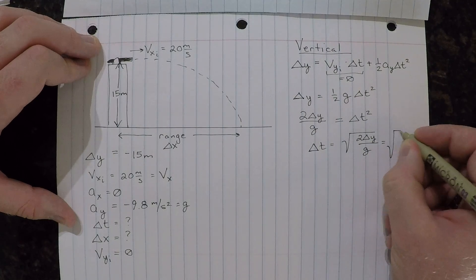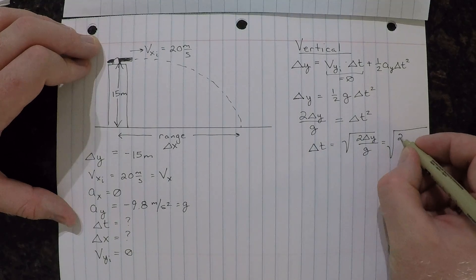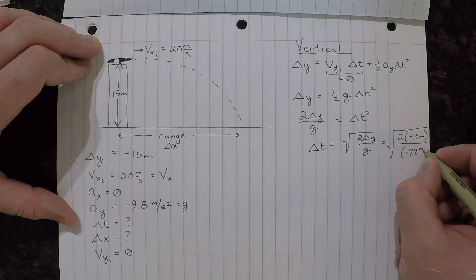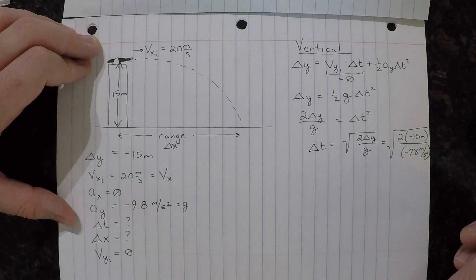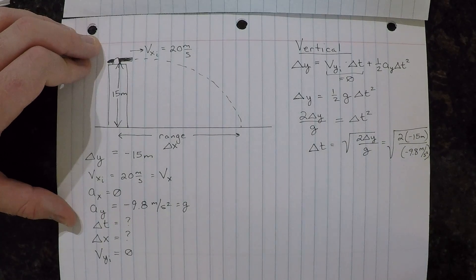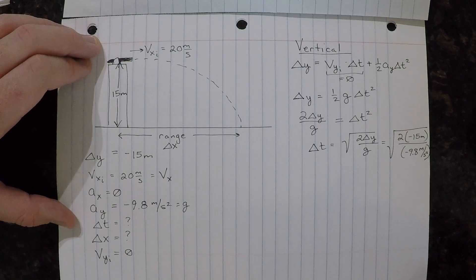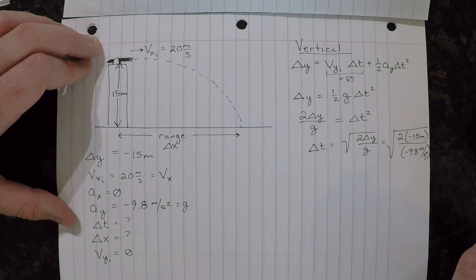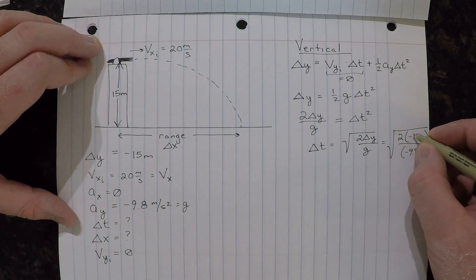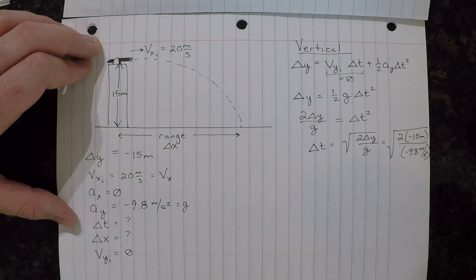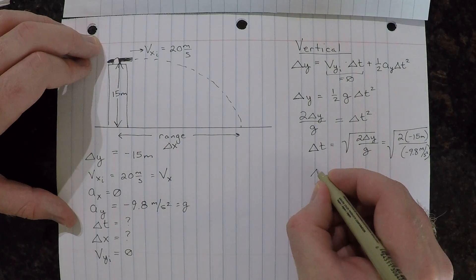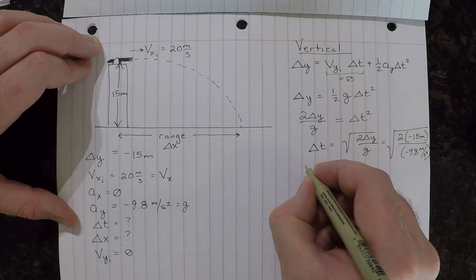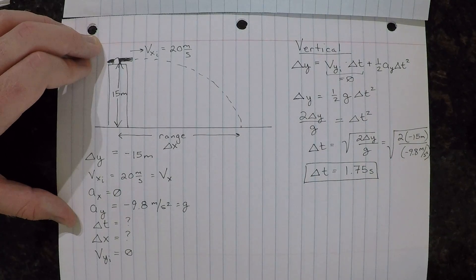And I can put my numbers in now. I always wait until the end to put my numbers in. So two times negative 15 meters divided by negative 9.8 meters per second squared. Now when I do this, I get negative 30 divided by negative 9.8. Negative 30 divided by 9.8 is going to be somewhere almost four, but not quite. And when I take the square root of that, notice how the negative signs cancel out, I will get a positive number under the radical. And delta t computes as 1.75 seconds. So this is the first thing that we didn't know that we have solved for.